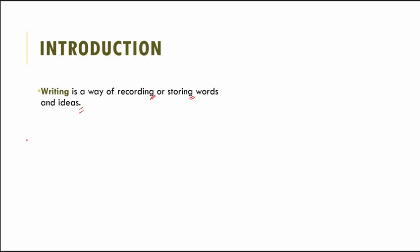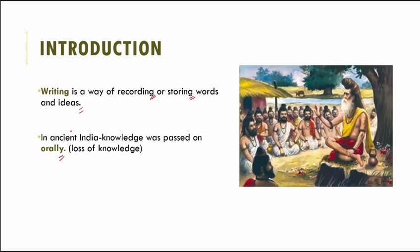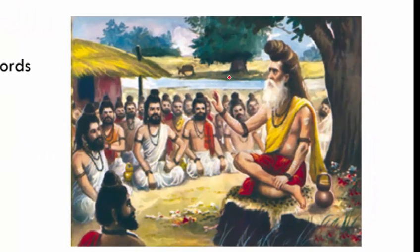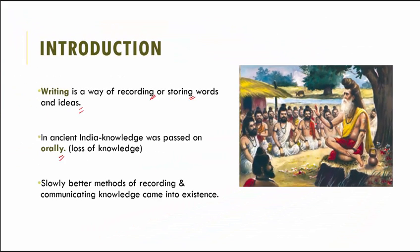In ancient India, knowledge was generally passed on orally, so it was communicated to only a very small number of people, resulting in loss of knowledge. As you can see here, this person is passing on knowledge to his peers, but none of them have a book or pencil to record what he's saying, so it could have been interpreted in different ways and knowledge could have been lost very easily.